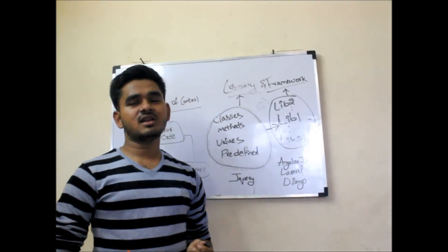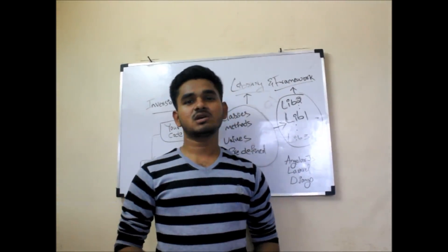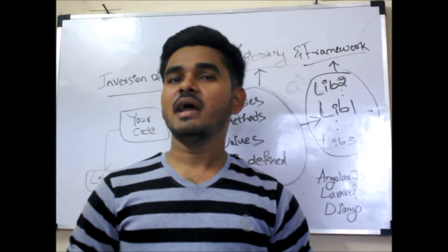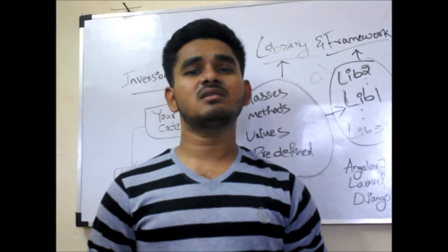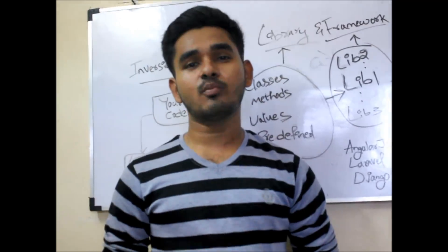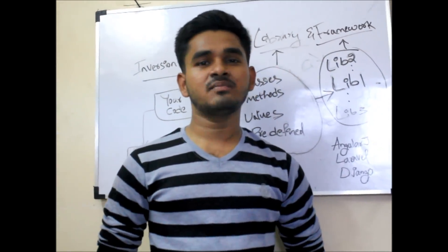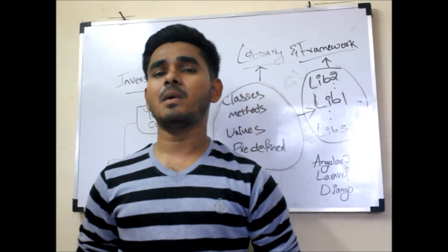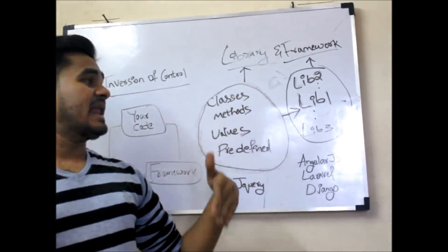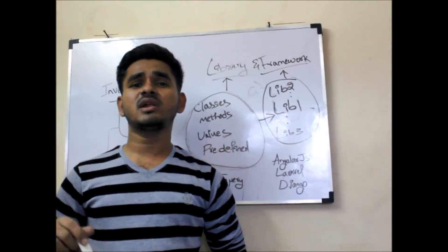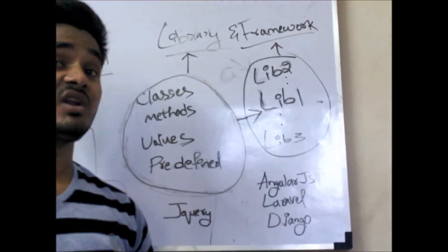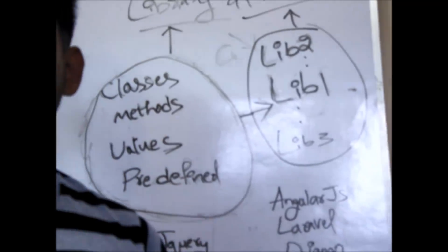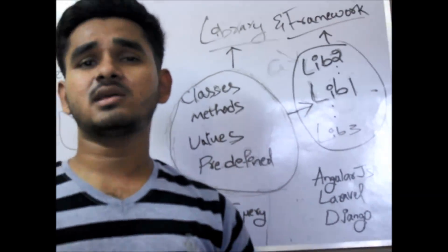See, library - in general what a library is - consider it as a college library. What does this consist of? It contains all the information like books, all the books related to your branch. In a similar fashion, libraries in computer science or programming is nothing but a collection of all the items related to the programming language like classes, variables, methods, some predefined things, etc.